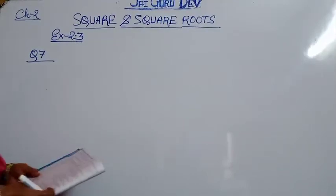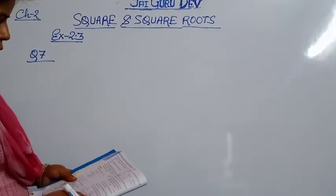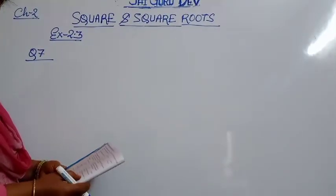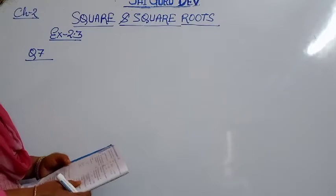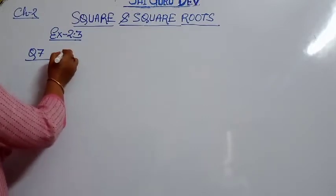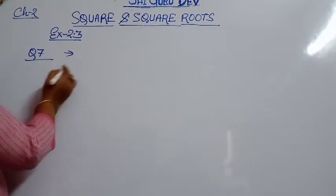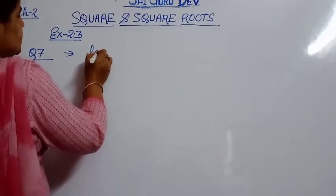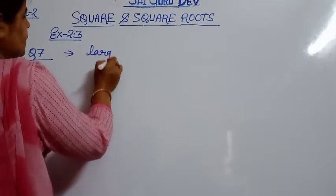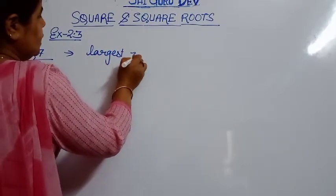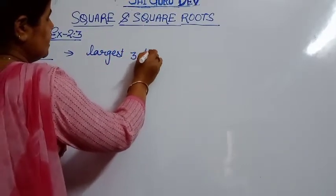Now see question number 7: Find the largest 3-digit number which is a perfect square. First of all, what you will do? First you will write the largest 3-digit number.